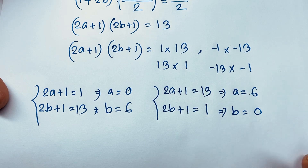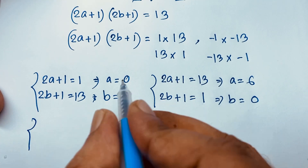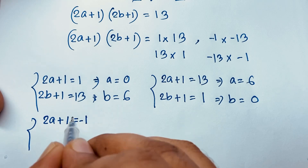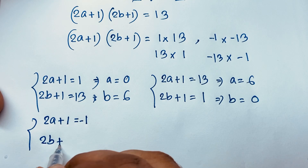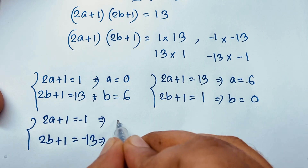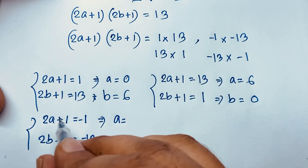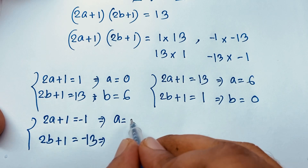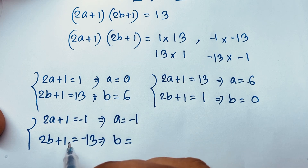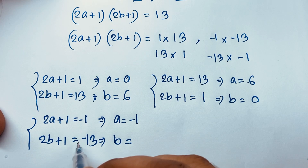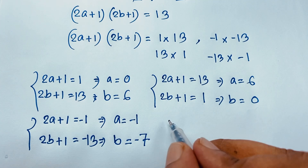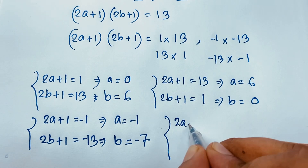Case 3: 2a + 1 = -1 and 2b + 1 = -13. So a = -1 (since -1 - 1 = -2, divided by 2 = -1) and b = -7 (since -13 - 1 = -14, divided by 2 = -7).